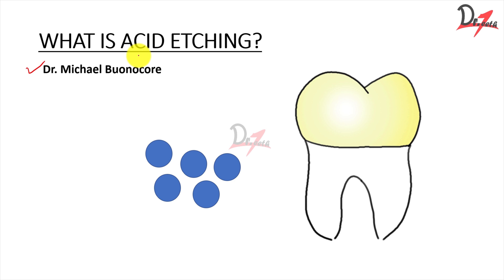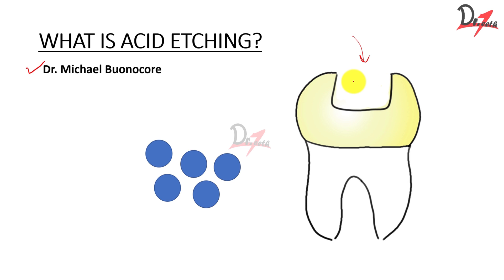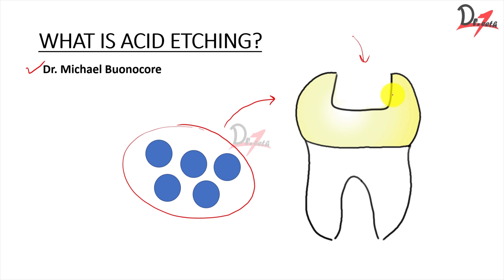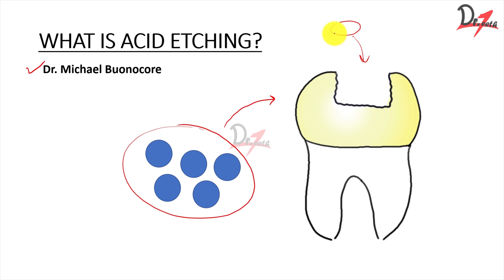If we have a restorative material and a cavity, the surface has smooth line angles and point angles — everything is smooth. If we try to put the restorative material there, they will not bond properly. So we need micro-mechanical bonding. We apply acid onto the surface of the tooth, and within 50 to 60 seconds it will dissolve the enamel rods, forming various micro and macro tags — basically undercuts where the restorative material can attach properly.